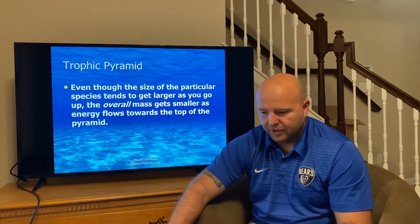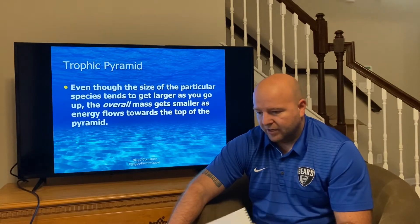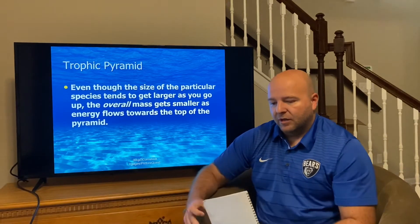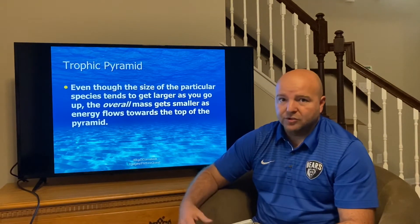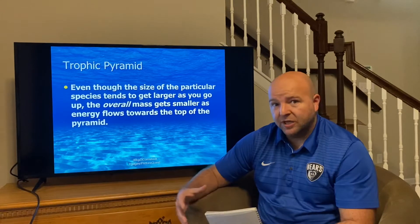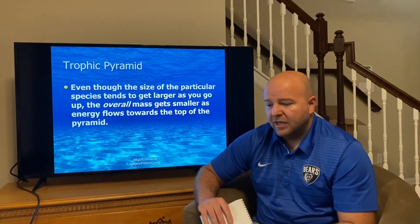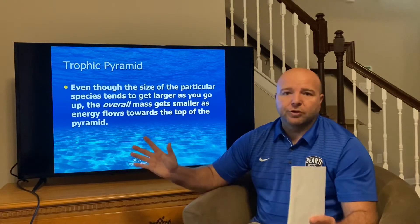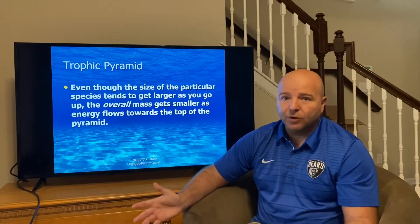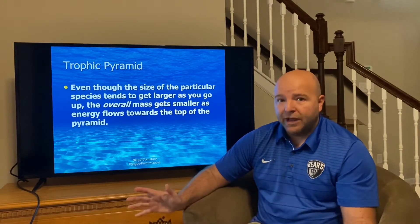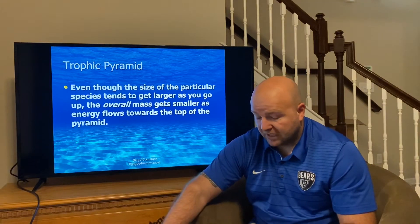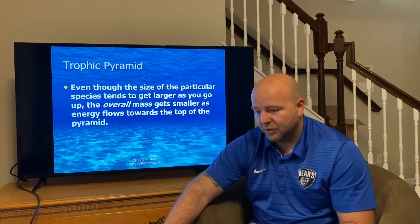For trophic pyramid, we want you to write this down: even though the size of individual species gets larger as you go up a trophic pyramid, the overall mass gets smaller. When we look at that pyramid getting smaller toward the top, it represents both energy and mass. If you were to add up the mass of all the krill in the world, even though they're much smaller than the whales that feed on them, their total mass would be significantly larger than the total mass of all the whales.